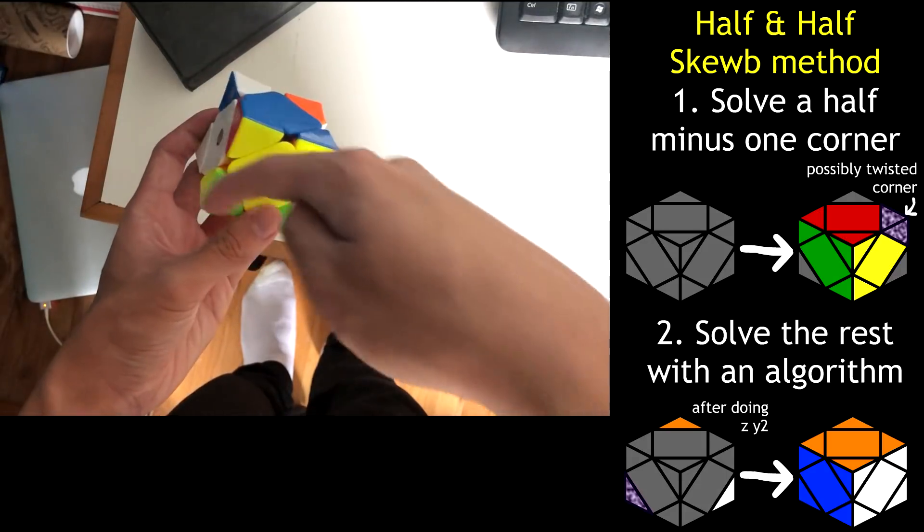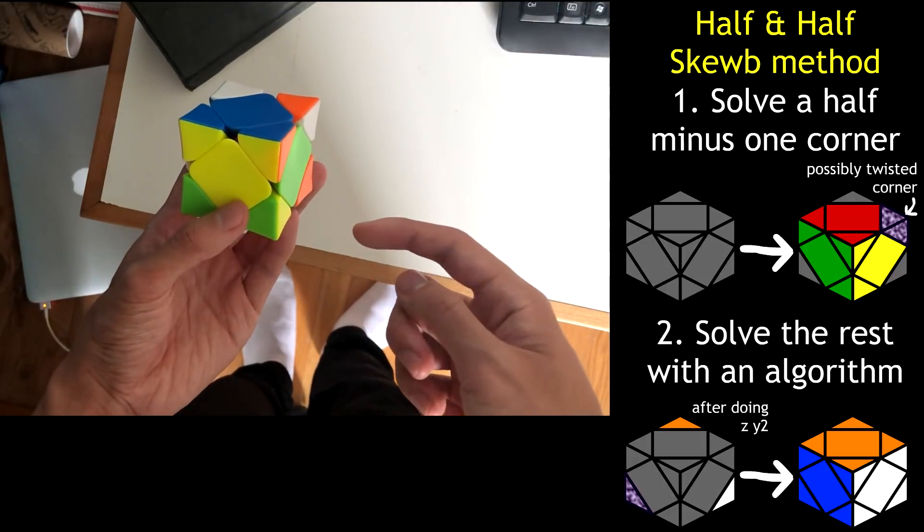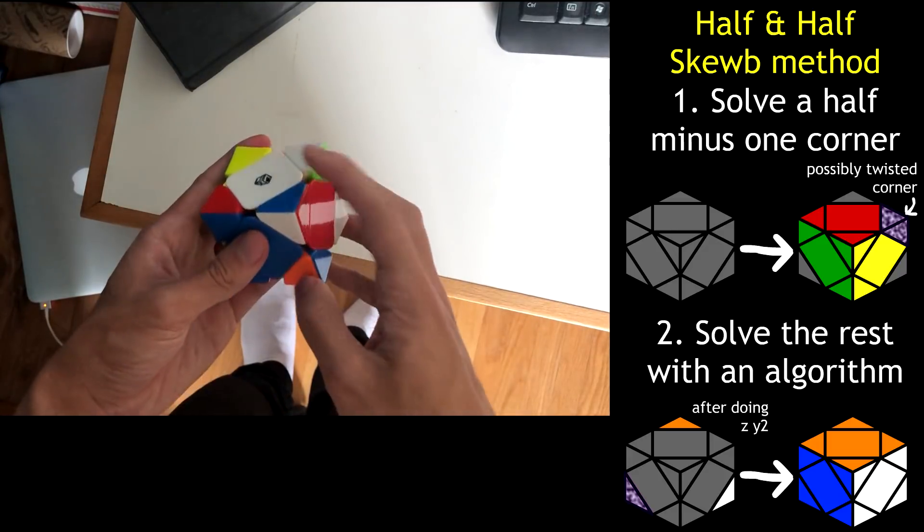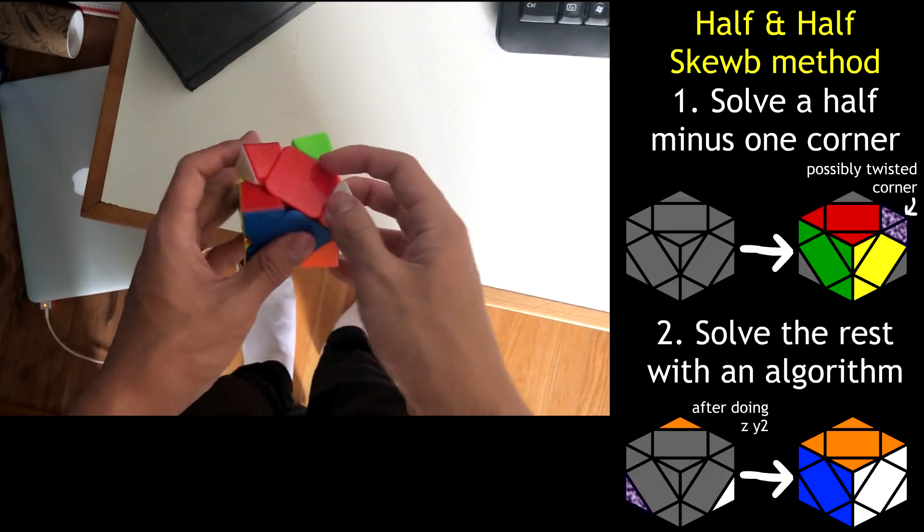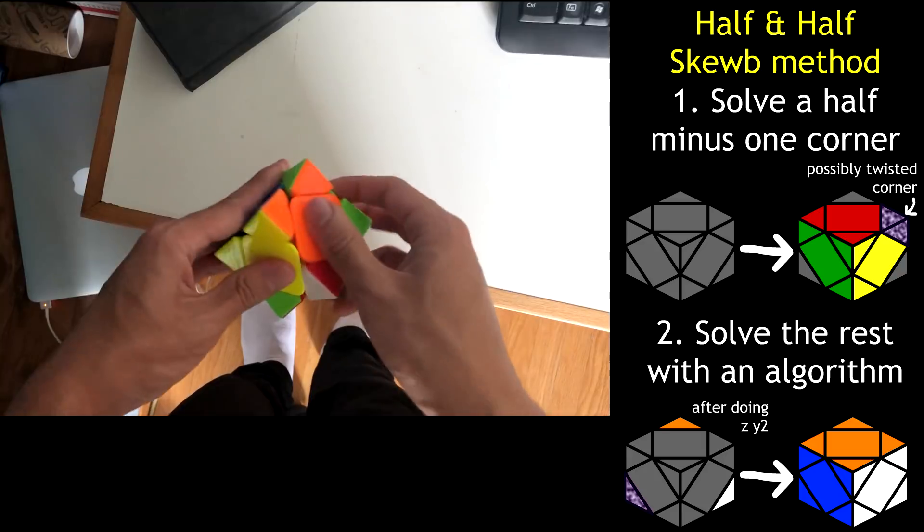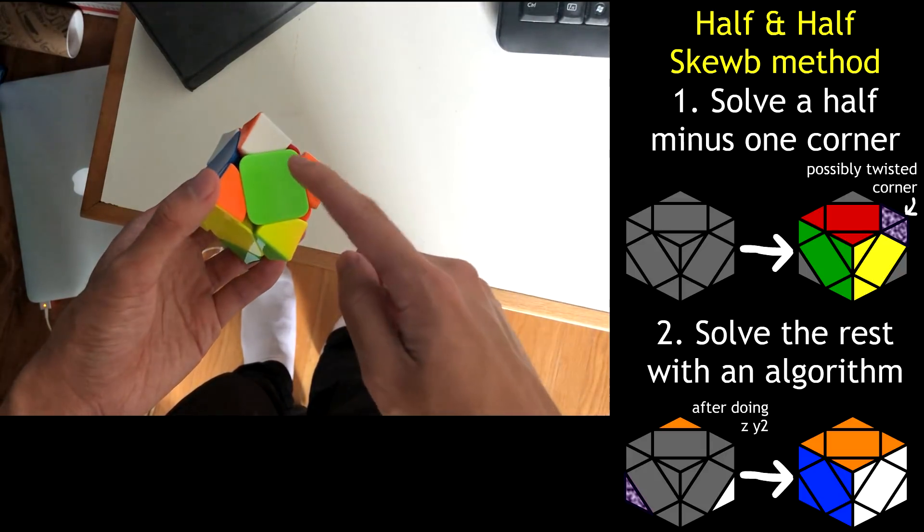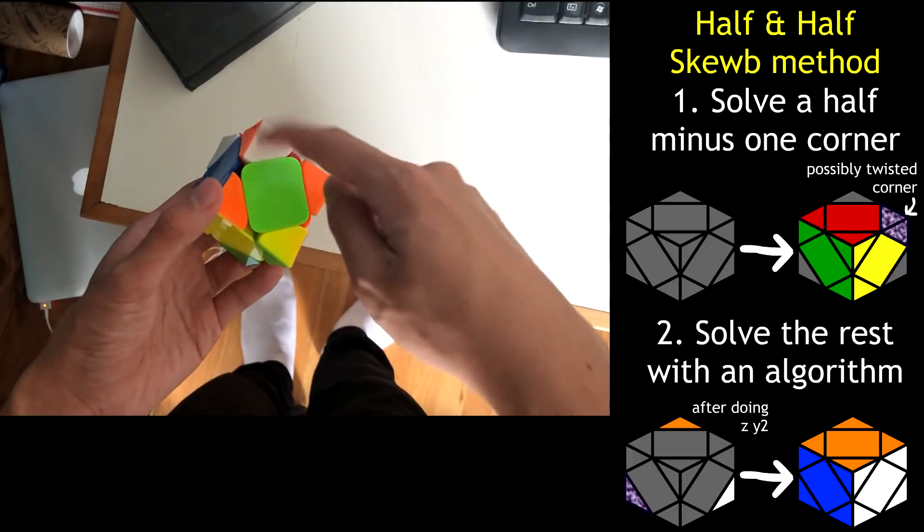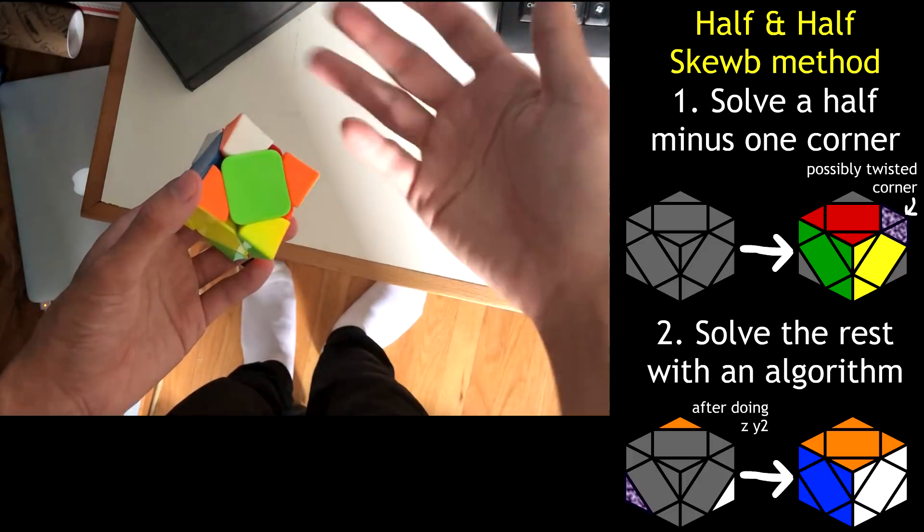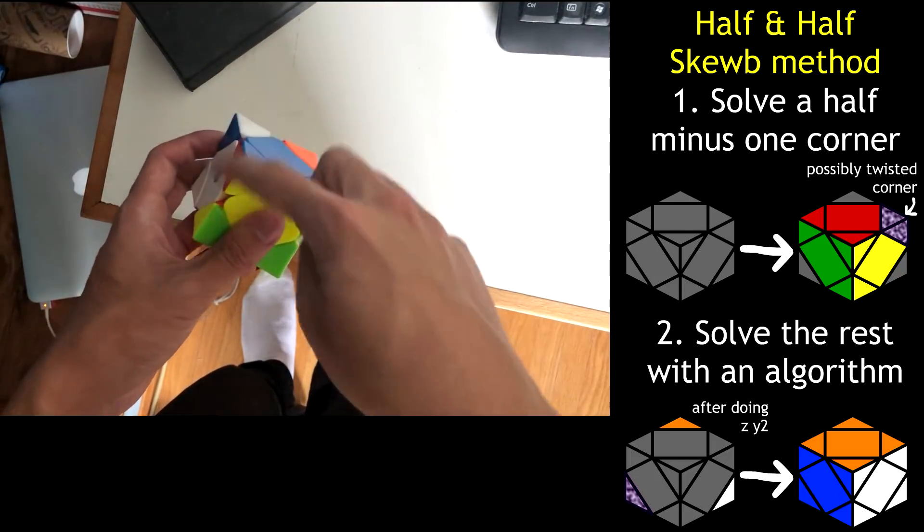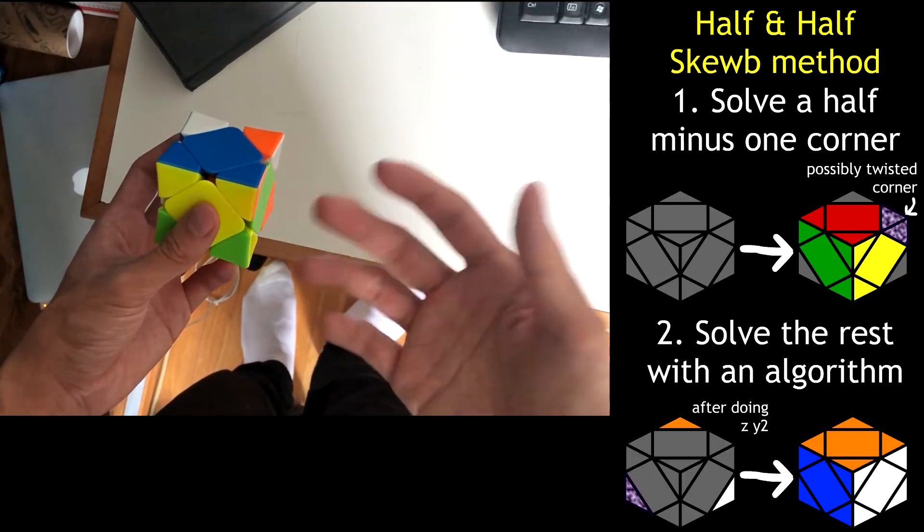When you have a chunk of four pieces like this, there are two possible centers you could extend with, on the left or on the right. In this case, we could either try to solve the red center, like that, or the orange one, like that. After that, because you only have to solve one of the two corners next to that center, there's another two choices you've got. So that totals four possible extensions from this chunk, to finish off step one.